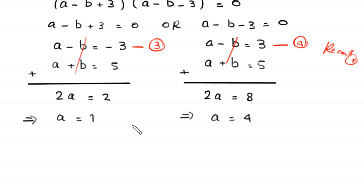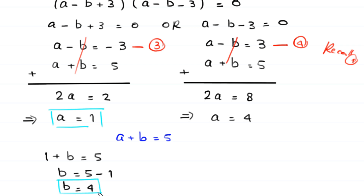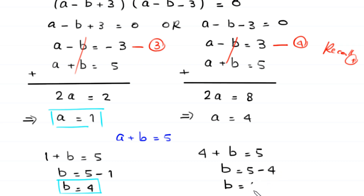So we have two values for a: 1 and 4. Using equation 1 (a plus b equals 5) to find b: when a is 1, then b equals 5 minus 1, so b equals 4. When a is 4, then b equals 5 minus 4, so b equals 1.